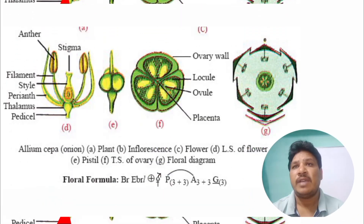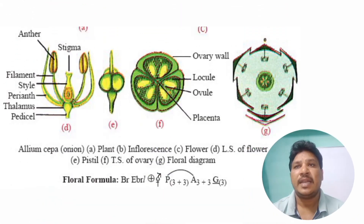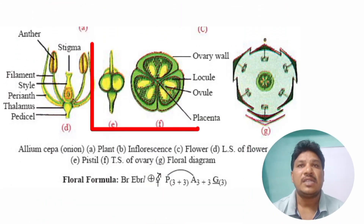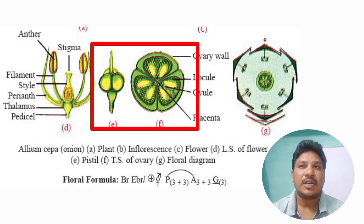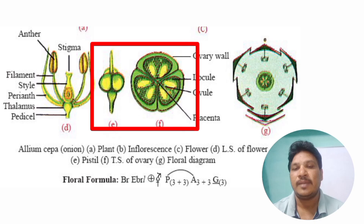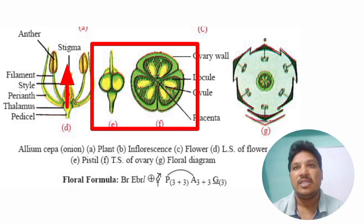In Liliaceae family members, the ovary is tricarpellary, syncarpous, superior, and trilocular with many ovules and axile placentation. The style is terminal, and the stigma is trifid and capitate.